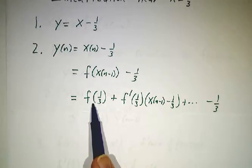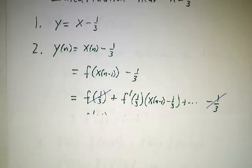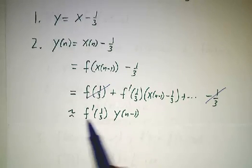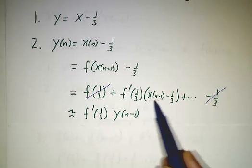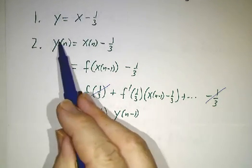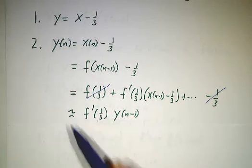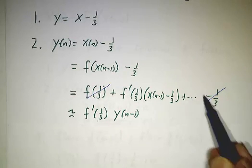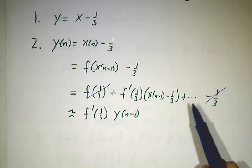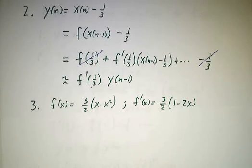But remember, 1 third was a fixed point. f of 1 third equals 1 third, so this term and this term cancel. And you're left with f prime of 1 third times, well, this is y of yesterday. So y today is approximately f prime of 1 third times y yesterday. And why is it only approximate? Because there are all the quadratic, cubic, quartic, all the terms in the Taylor series that we're just ignoring. We're only keeping the first term.